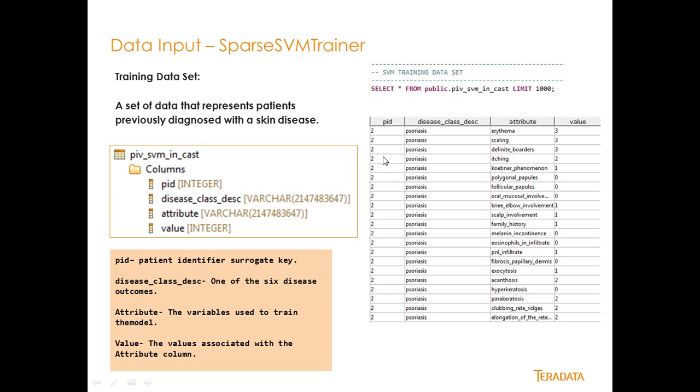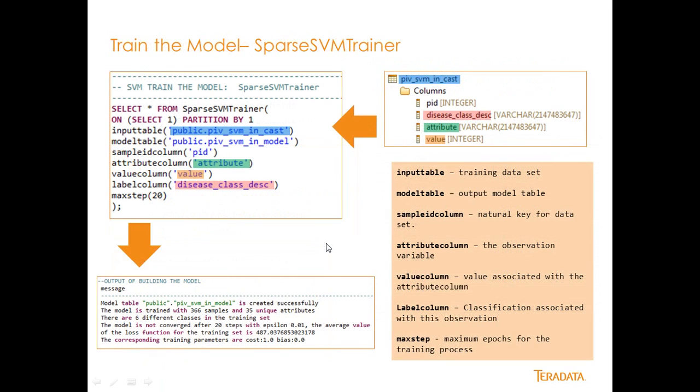And if you look over here, here's the patient ID. Here's the disease class description. So this is for psoriasis. And here are the 34 variables. And here are the values that are associated with those variables. And if you look at the previous screen in more detail, it'll explain what these variables really mean. And it's really just a threshold of severity of this observation. So let's go ahead and get started.